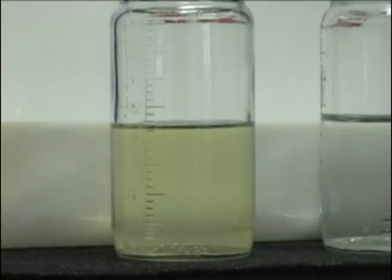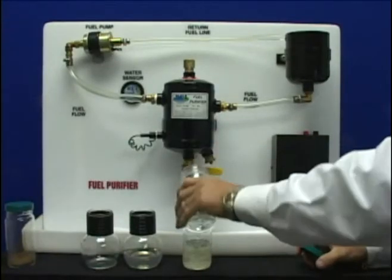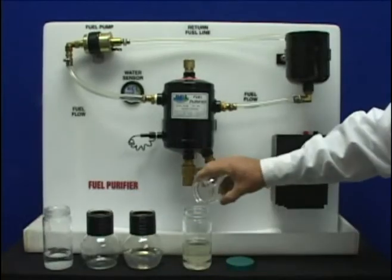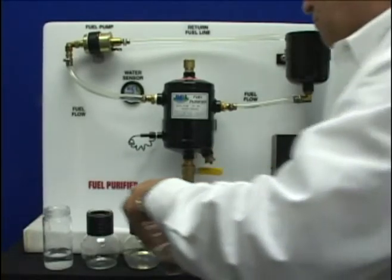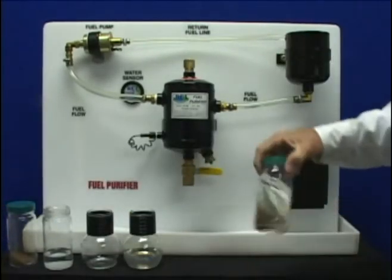This is the quality of the fuel we want to go into your equipment. We are going to add water and dirt to the fuel flow to see how the purifier works. Adding this much water and dirt to any conventional filter will instantly clog the filter, causing the fuel flow to slow and eventually stop.